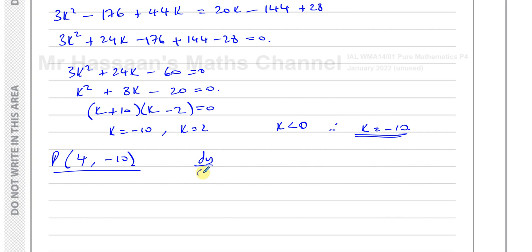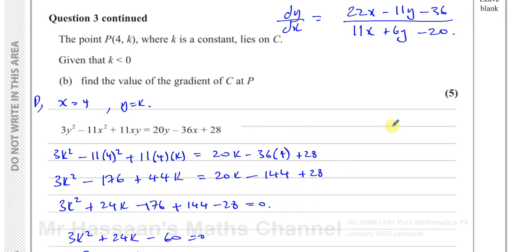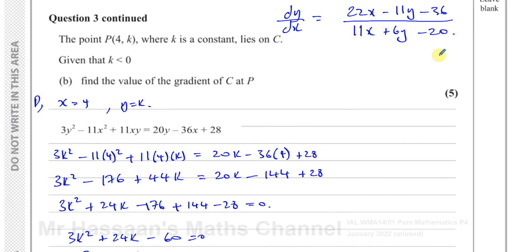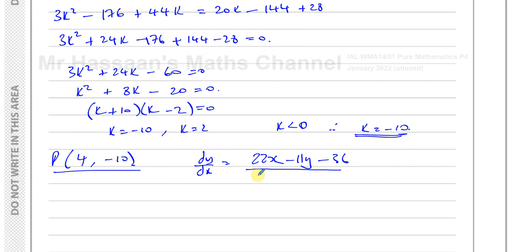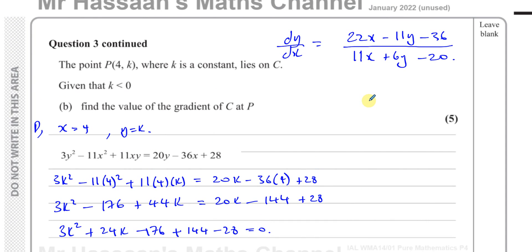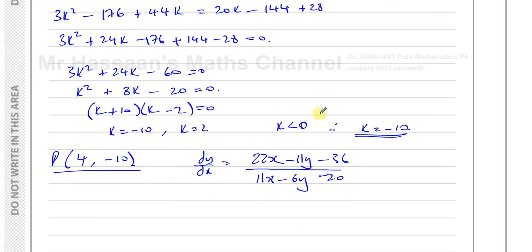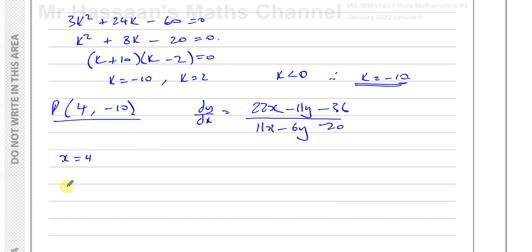And we know that dy/dx is given by our expression, which is (22x - 11y - 36)/(11x + 6y - 20). So to find the value of the gradient of C at point P, we just have to substitute x = 4 and y = -10 into dy/dx. That's going to give you (22(4) - 11(-10) - 36)/(11(4) - 6(-10) - 20).